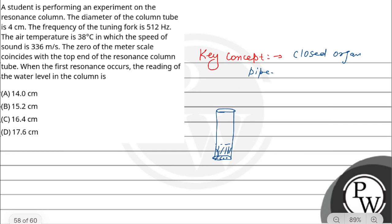When the first resonance occurs, we need to consider the node and antinode conditions. For the first resonance, we have the fundamental mode. The length for this fundamental mode is determined by the resonance condition.